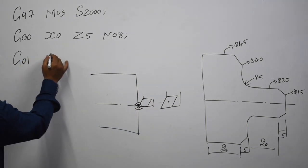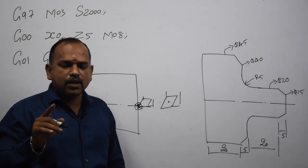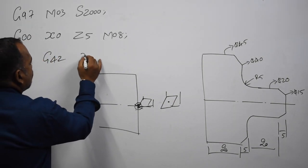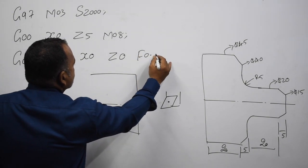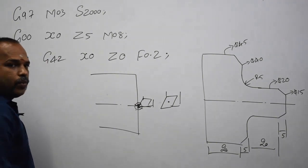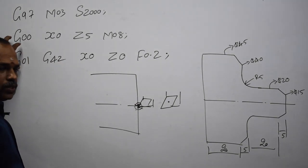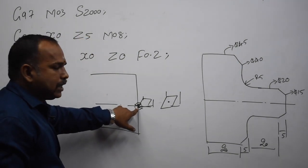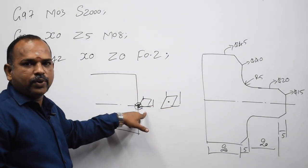G01, G42. G42 is tool nose radius compensation, right. X0, Z0, feed. The feed is 0.2 — 0.2 mm per revolution. G01, G42, X0, Z0, feed 0.2 mm per revolution.